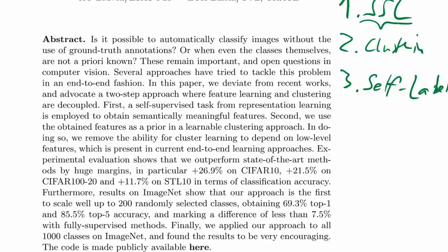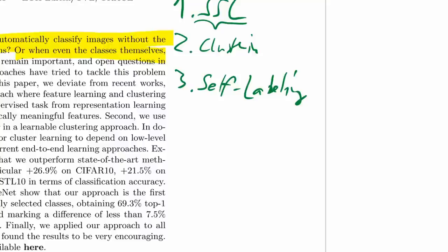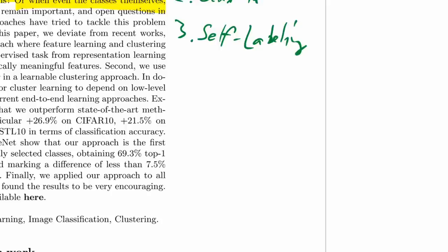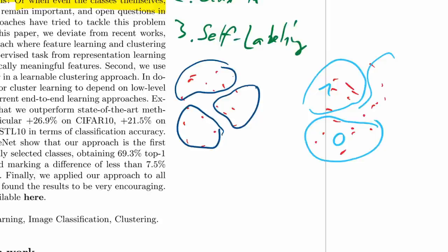The problem they ask is: is it possible to automatically classify images without the use of ground truth annotations, or even when the classes themselves are not known a priori? You might think this is outrageous — how can you classify when you don't even know what the classes are? The way to imagine it is: if you have a dataset and you learn to classify it, that basically means you cluster it — you put some data points in the same clusters.